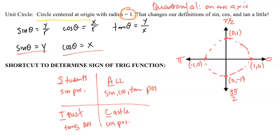The acronym to remember this is 'All Students Trust Castle': All (quadrant one — all positive), Students (quadrant two — sine positive), Trust (quadrant three — tangent positive), Castle (quadrant four — cosine positive). If you just trust this rule, you will be good at the unit circle.